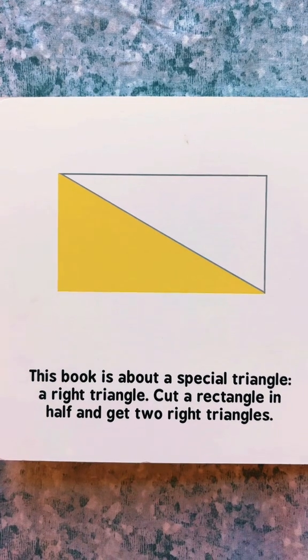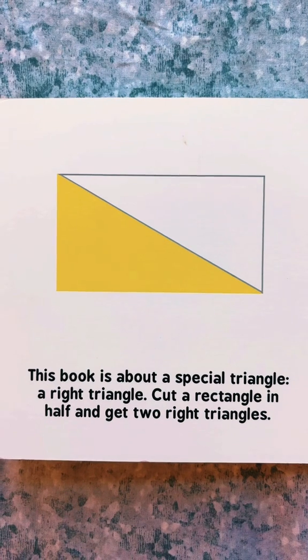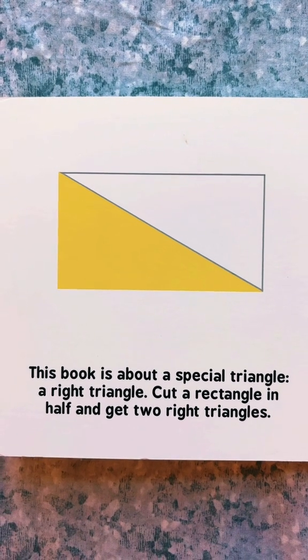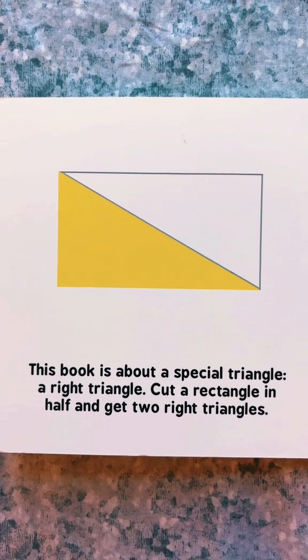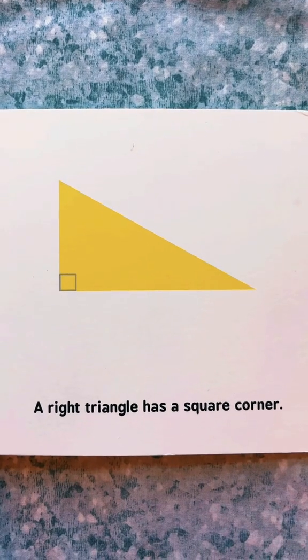This book is about a special triangle, a right triangle. Cut a rectangle in half and get two right triangles. A right triangle has a square corner.